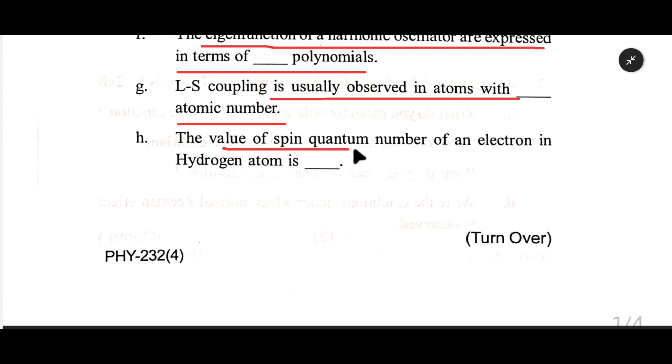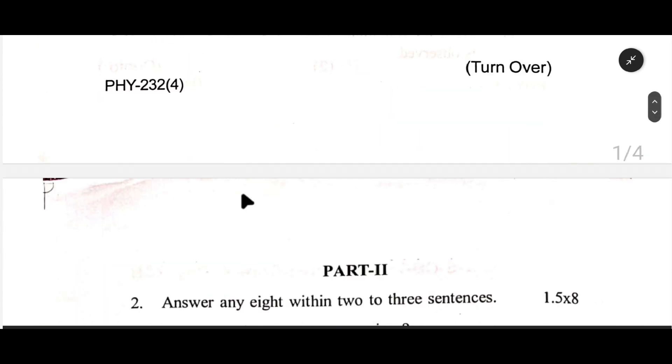h. The value of spin quantum number of an electron in hydrogen atom is dash.